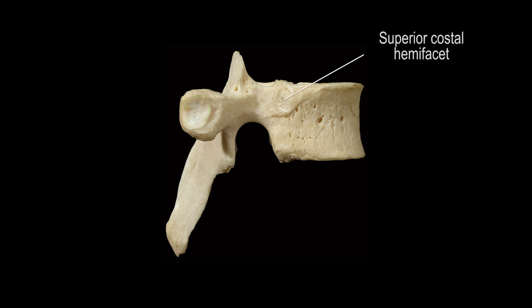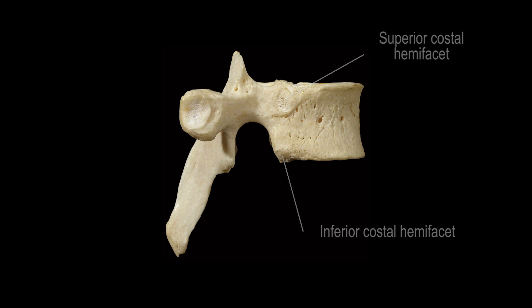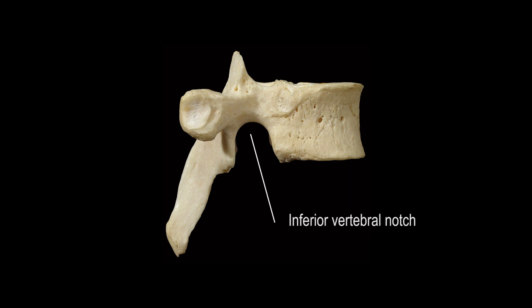This is the superior costal hemifacet, and we can see a bit of an inferior costal hemifacet right here. This is the inferior vertebral notch, and this is the superior vertebral notch.